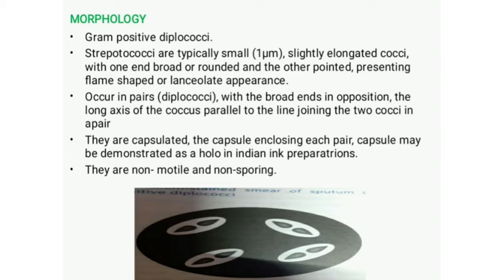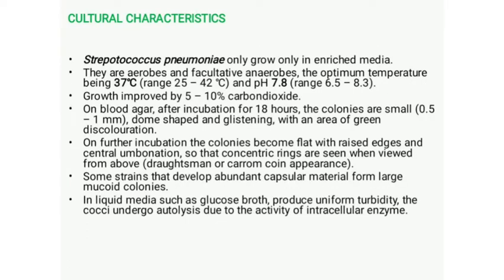When subjected to gram staining, they appear gram positive. Indian ink preparation shows the capsule as a clear halo around the diplococci. In the figure, the capsule enclosing each pair of diplococci is visible.